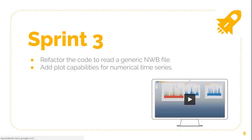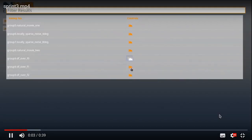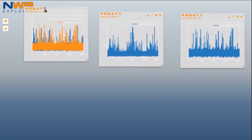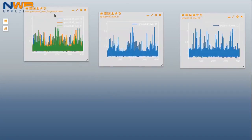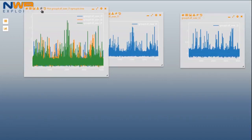Sprint Three is the first that I will be able to show you in action. In this sprint, besides refactoring the code to read the generic NWB file, we also added support for plotting numerical time series read directly from the file. This is me plotting some time series. Now this is me moving those widgets around. We can overlap those plots — it's easier to compare them this way. We can resize widgets and calculate the average of the overlaid plots.